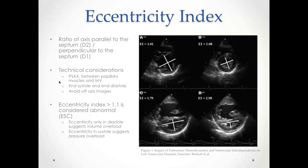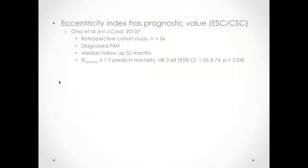The ESC defines an eccentricity index over 1.1 as abnormal. Eccentricity only in diastole suggests volume overload, while eccentricity in systole suggests pressure overload. The eccentricity index also has prognostic value. A retrospective study by Qu et al. with 56 patients diagnosed with pulmonary arterial hypertension followed for 52 months found that an end-diastolic eccentricity index over 1.7 predicted mortality with a hazard ratio of 3.68.